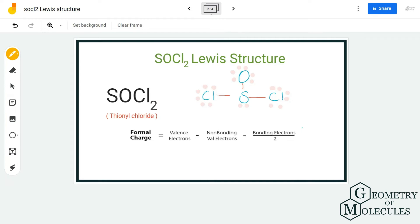You can either use this formula that we are going to use here, or you can also use the formal charge calculator that we have linked in our description box below. We are going to calculate the charges for chlorine, oxygen, and sulfur atoms.